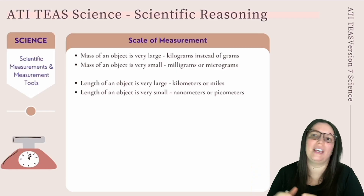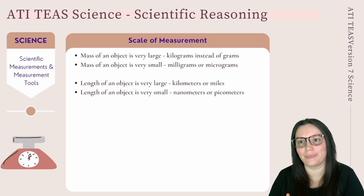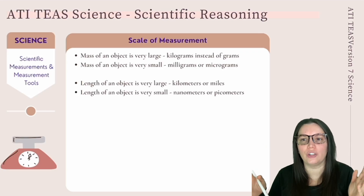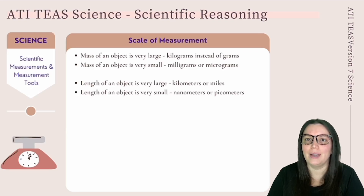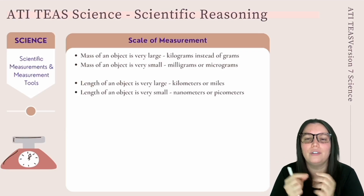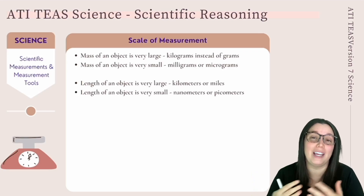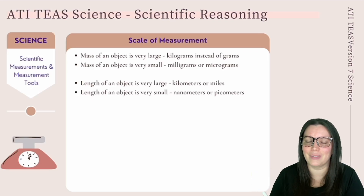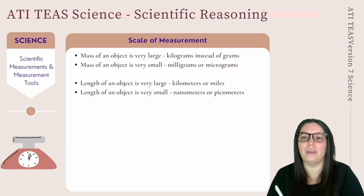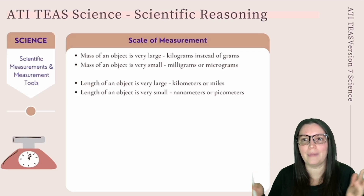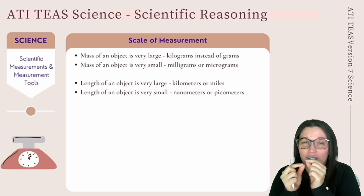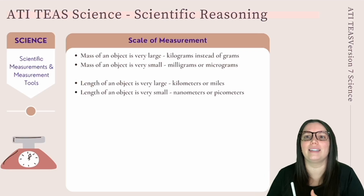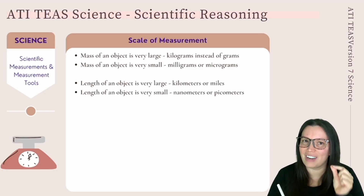We also need to use appropriate scales of measurement. If the mass of an object is very large, we measure in kilograms rather than grams. If it's very small, like a dust particle, we might use milligrams or micrograms. The same is true for length: a large object like a building might require kilometers, while a tiny molecule might require nanometers or picometers. Using the appropriate scale ensures accurate results.